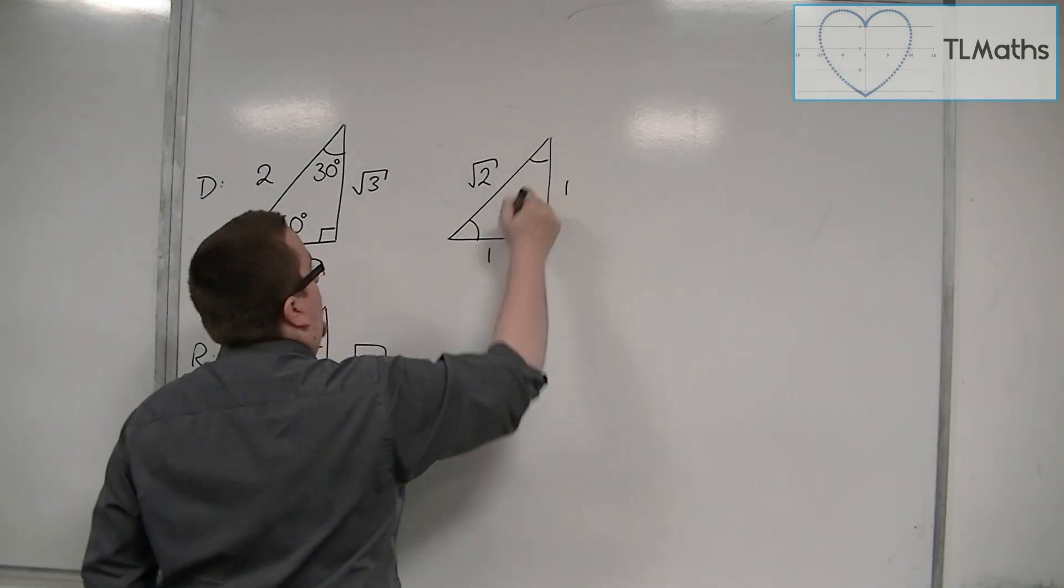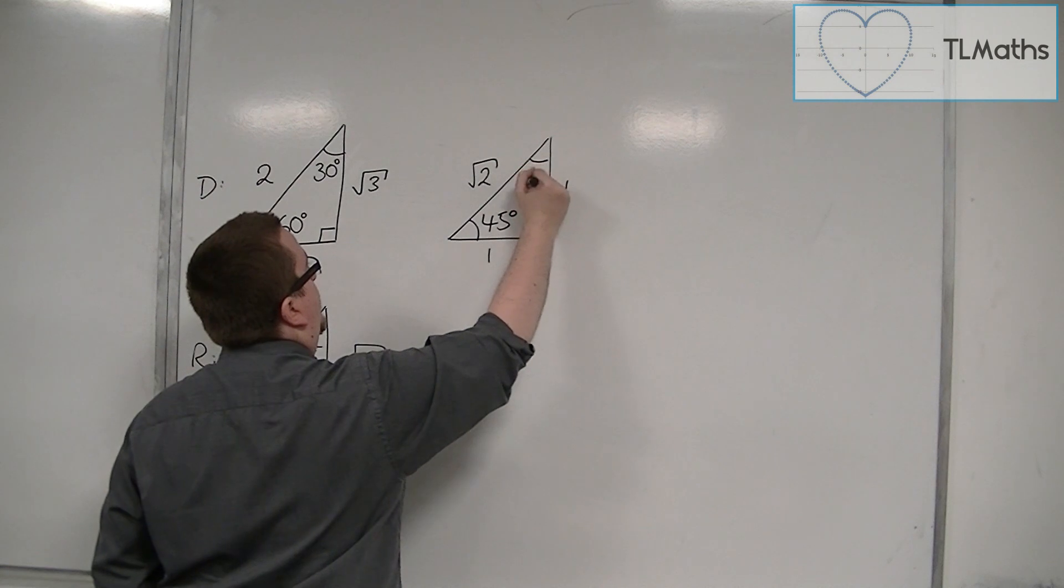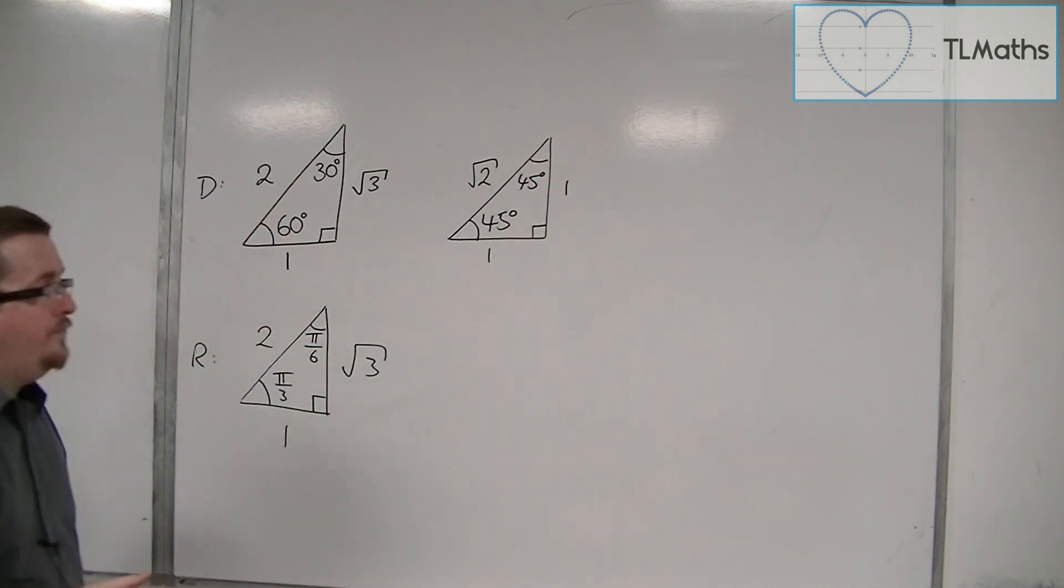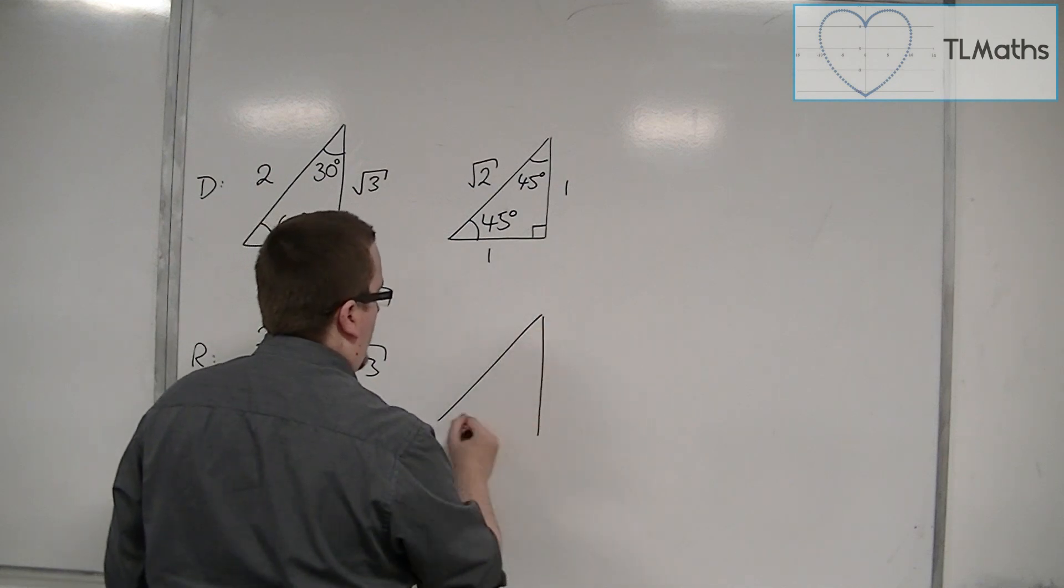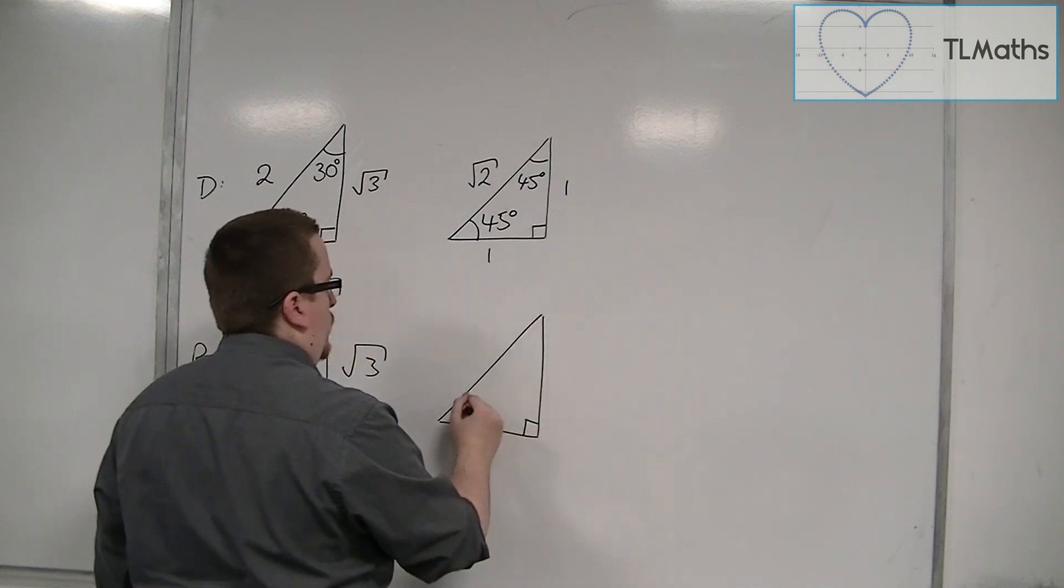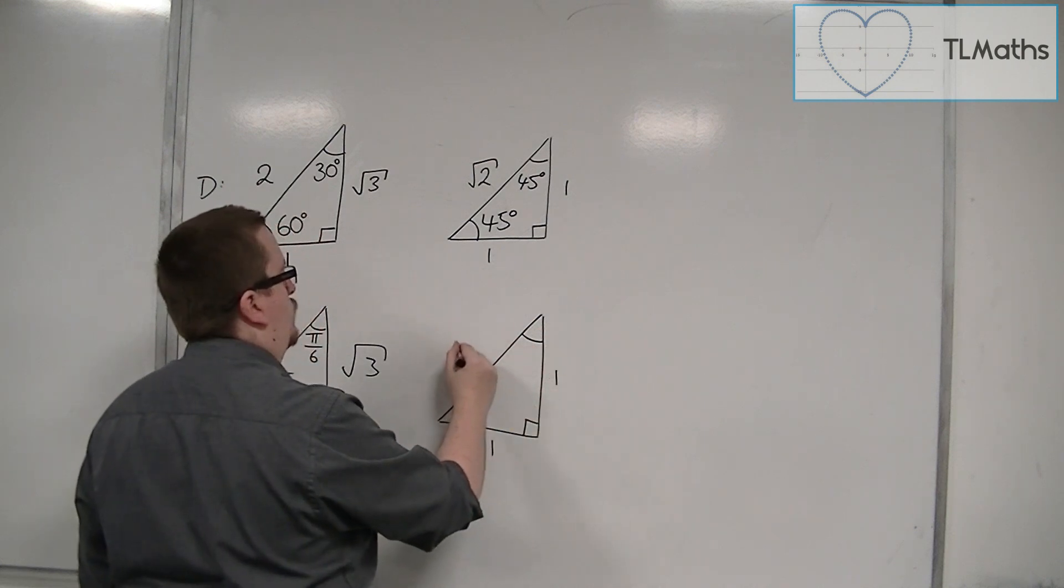These two angles, because of the isosceles and being right-angled, will be the same, and so they must be 45 degrees each. In radians, then, what we can do is we can say, well, 1, 1, and root 2.